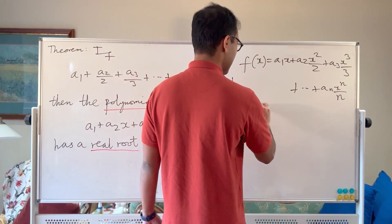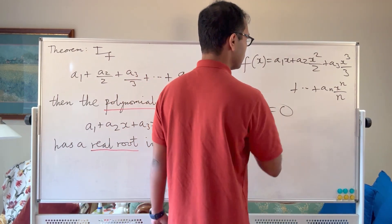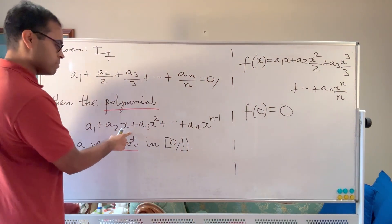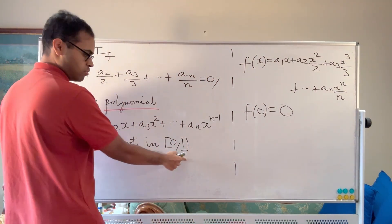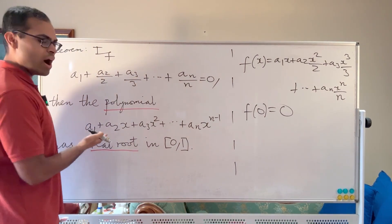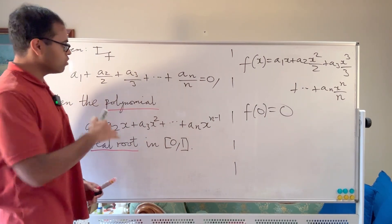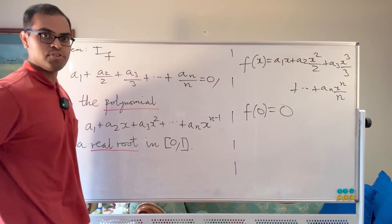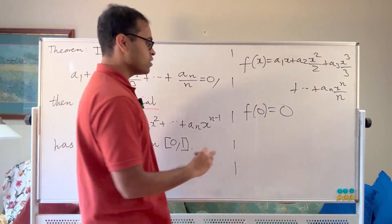The second thing we know is that f(0) is actually equal to 0. Now we don't know anything about our original polynomial that we want to show has a root in [0,1]. We don't know what it is at x equals 0 because it's equal to a1 and we have no information about a1 alone, only this relation between the coefficients. But for our f(x), we know f(0) is 0.